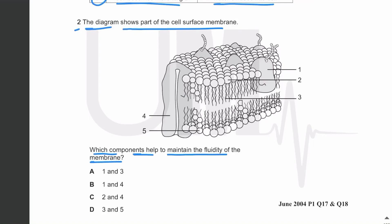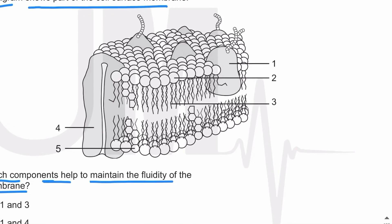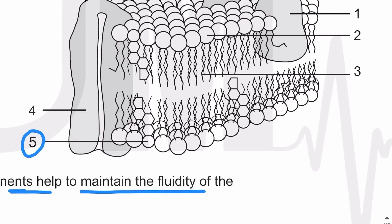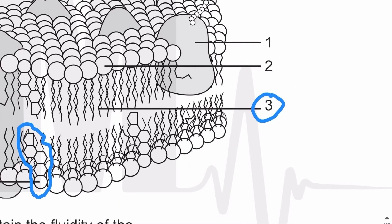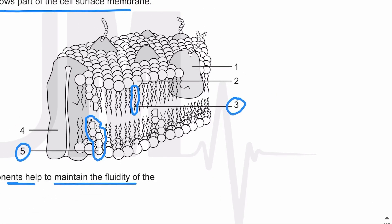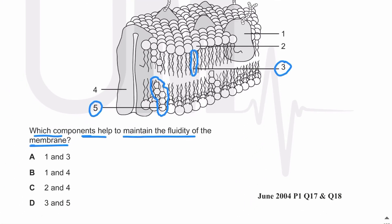The parts of the membrane that maintain fluidity are cholesterol and the fatty acids of the phospholipids. Part five labeled in the diagram is cholesterol, and part three is the fatty acid chain of the phospholipid. Fluidity is controlled and maintained by the types of fatty acid chains in the phospholipid and by the cholesterol. The answer is D — three and five.